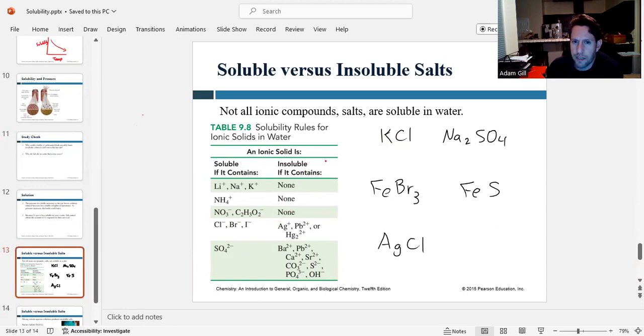Everything on the left of the table is soluble. Things on the right side are insoluble. So we're looking at KCl here. It's got a potassium. Now we know that anything with potassium is soluble. So I would expect this compound to dissolve in water.